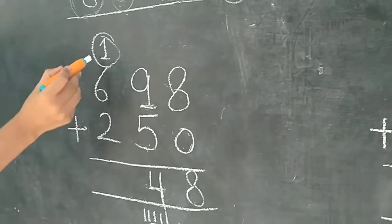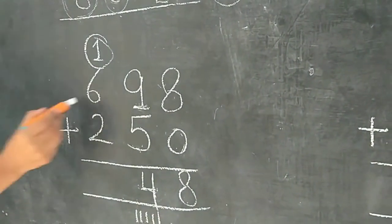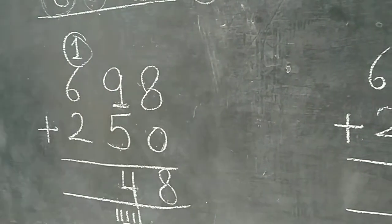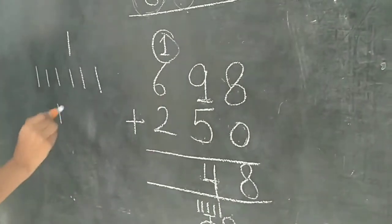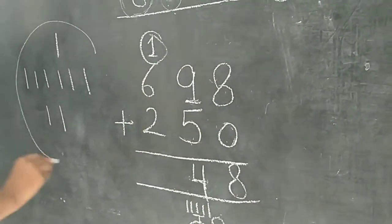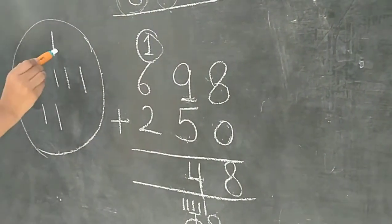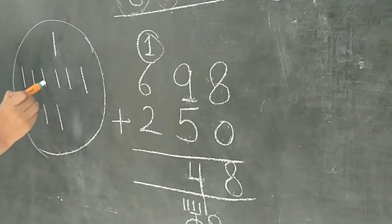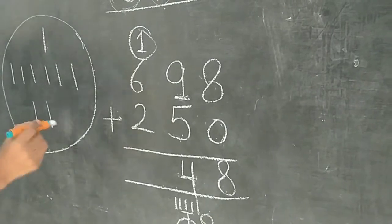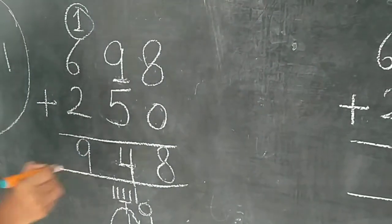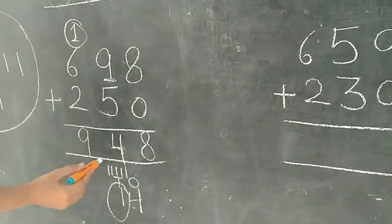Now we have to count carry first. After 1, we count 6: 1, 2, 3, 4, 5, 6. Then count together — ab in sabko ek saath count karna hai: 1, 2, 3, 4, 5, 6, 7, 8, 9. We write here 9. So the answer is 948.